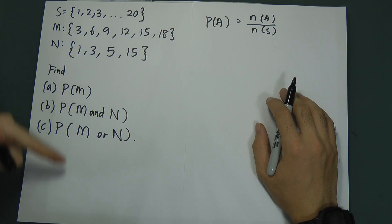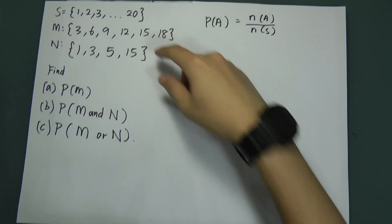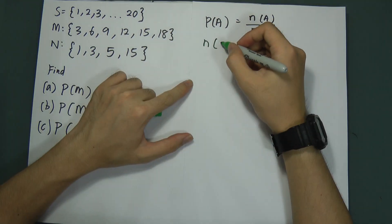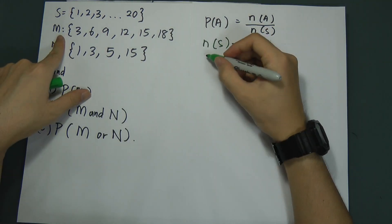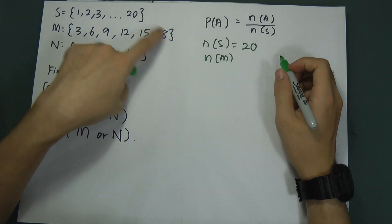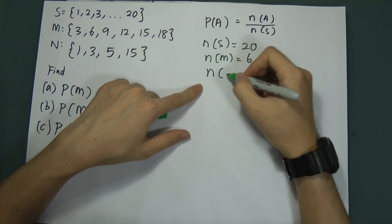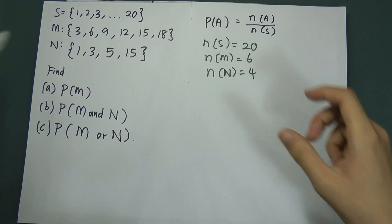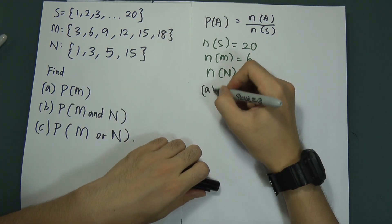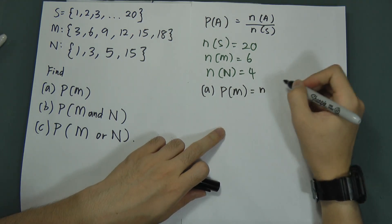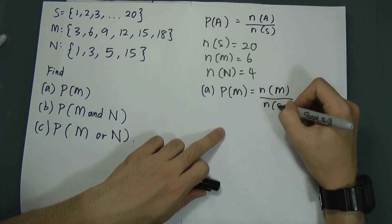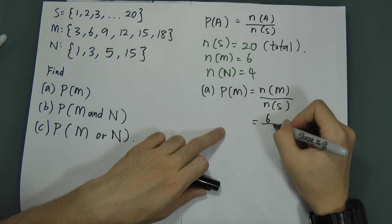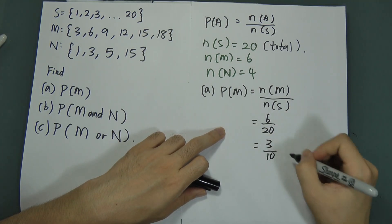Before we start, let's find the numbers first. Number for sample space — we got 1 to 20, so that's 20. Number for M: we got 1, 2, 3, 4, 5, 6 — so 6. Number for N: we got 1, 2, 3, 4 — so 4. For part A, he asked for probability of M, which equals 6 divided by 20, which simplifies to 3 over 10.